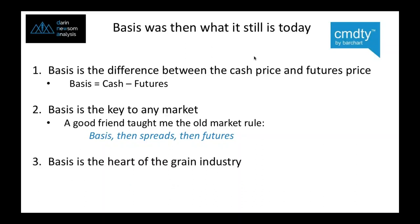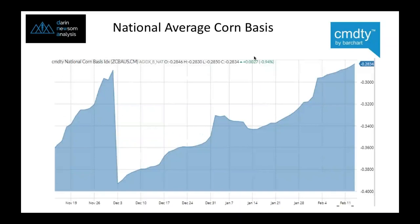Basis is the heart of the grain industry. It's what merchandisers trade. It's kind of the judge and jury of what will ultimately happen in a market. Is it strong? Is it weak? You can read so much into basis. Having good weighted average cash indexes allows us to create so many studies that help us understand the overall situation. This is true for cash grain trading, hedging, and so on.